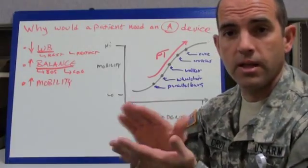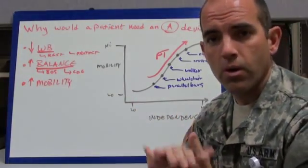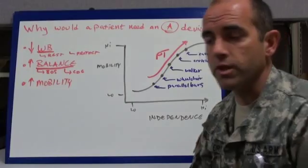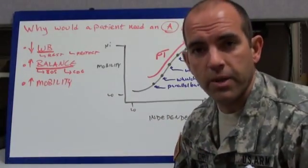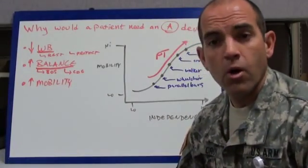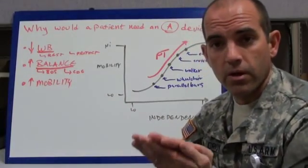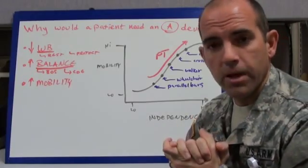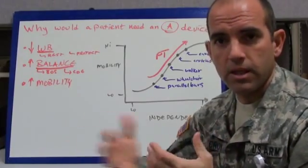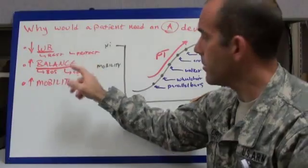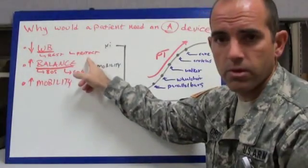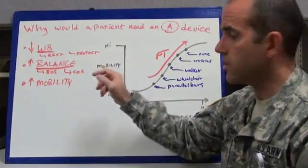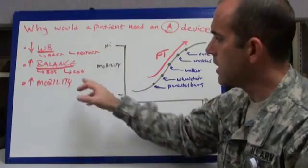Anybody that sustained a fracture, a ligament injury, or undergone some type of orthopedic surgery, they'll have pain with weight-bearing, or weight-bearing on that lower extremity might impair their ability to heal. So decreased weight-bearing is one of the primary reasons — in order to protect the lower extremity or the pelvis.